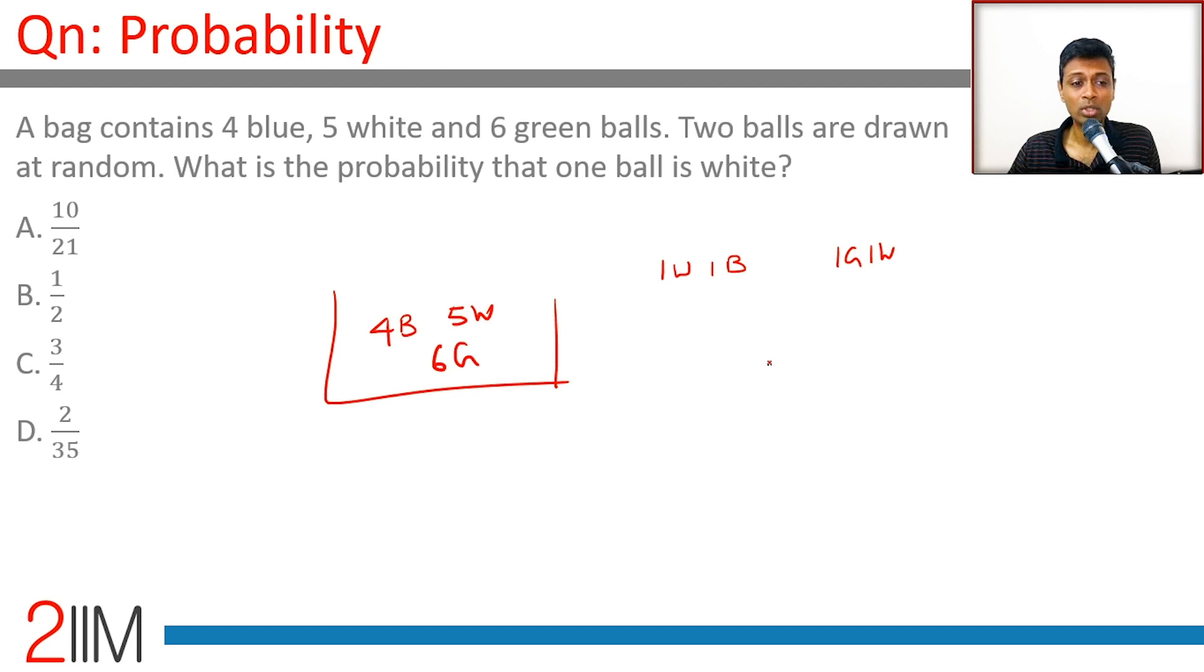So the total ways of selecting is 4 plus 5 plus 6, fifteen C2 - selecting two balls out of fifteen balls totally.